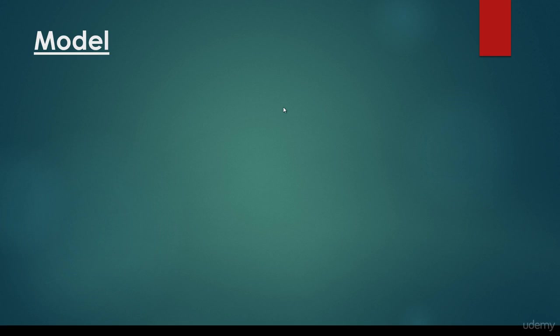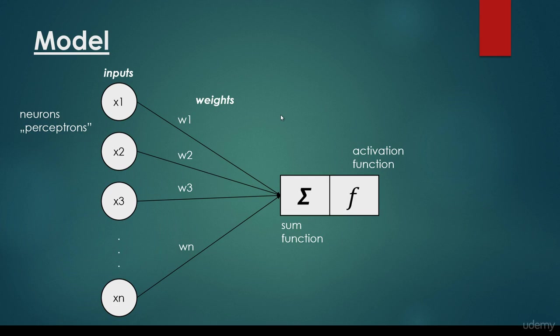In this video we are going to take a closer look at the model — how artificial neural networks are built. We have been talking about in one of the previous lectures that a biological neural network can be modeled with the help of a directed graph. So we have the nodes, the so-called neurons or perceptrons, and we have the edge weights, basically the axons in the biological neural network.